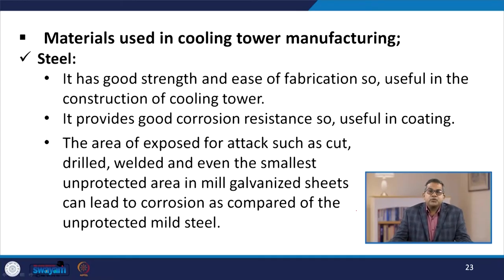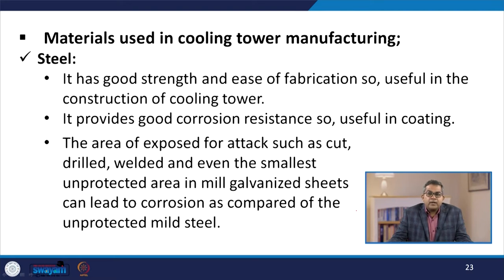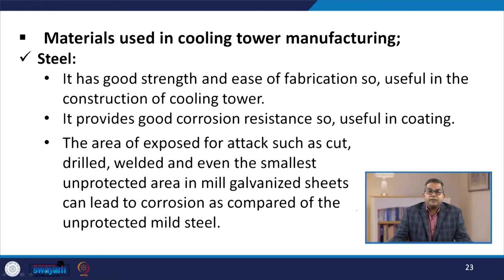Now let us talk about the materials used in cooling tower manufacturing. One of the foremost choices is steel, which has good strength and can be easily fabricated, making it quite useful in cooling tower construction. It also provides good corrosion resistance and is useful for coatings. However, areas exposed to attack — such as cut, drilled, or welded regions — or even the smallest unprotected area in milli-galvanized sheet, can lead to corrosion compared to unprotected mild steel, so careful attention is essential.